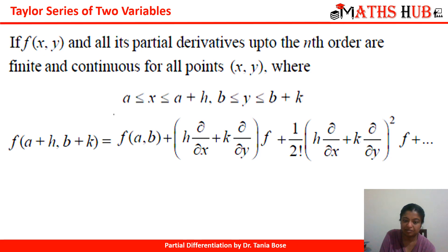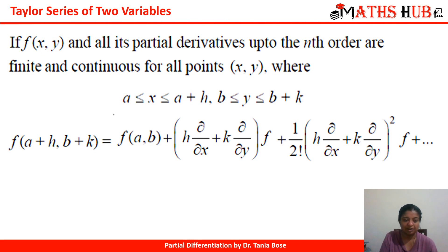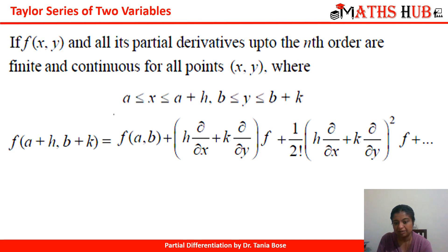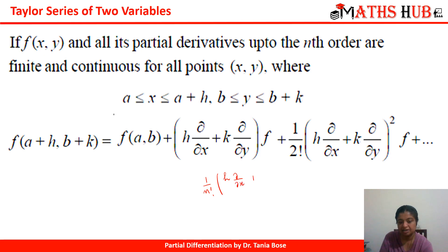Whenever we have a function of two variables f(x, y) and all its partial derivatives up to nth order are finite and continuous for all points (x, y) where x lies between a and a+h and y lies between b and b+k, then f(a+h, b+k) equals f(a,b) plus h·(∂/∂x) + k·(∂/∂y) of f, plus 1/2! times (h·∂/∂x + k·∂/∂y)² applied to f, and so on. The nth term is 1/n! times (h·∂/∂x + k·∂/∂y)^n applied to f, and it is an infinite series.